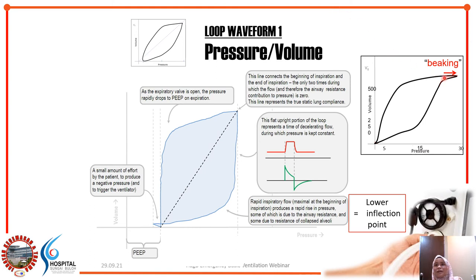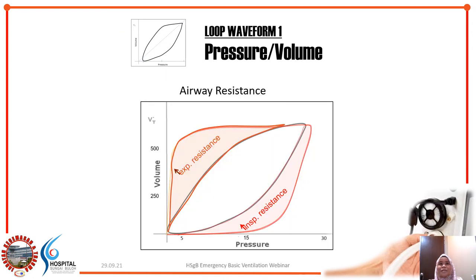Over-distension risks barotrauma, and you should reduce the tidal volume if you see beaking — the ventilator may be set too high. Further down on the expiratory limb, the critical closing pressure is the point where alveoli start to close, seen as a big drop in pressure. Regarding airway resistance: as resistance increases the loop becomes wider. Increased expiratory resistance is more commonly seen, for example in asthma; inspiratory resistance can increase from a kinked ETT or patient biting.